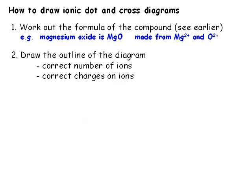Let's do a worked example. Magnesium oxide is made of Mg²⁺ ions and O²⁻ ions. If we swap the valencies and simplify — since both divide by 2 — we have the formula MgO. This means that we need only one magnesium ion and one oxide ion. We can draw these in square brackets and put the correct charges on them.